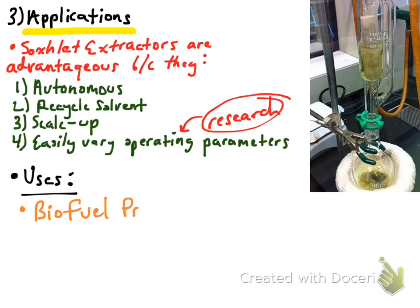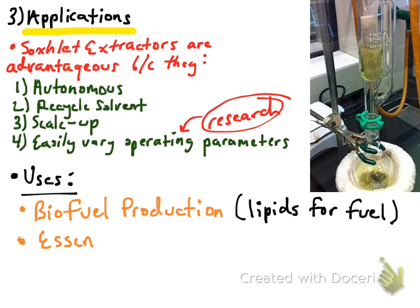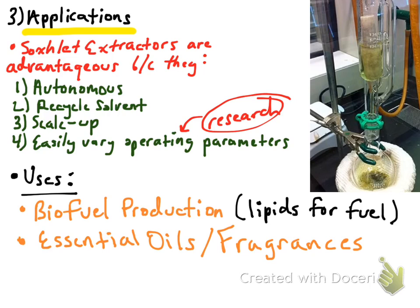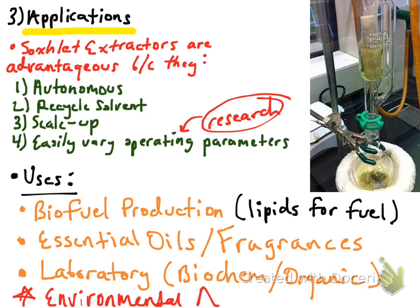There are many uses for Soxhlet extractions. The first and main one is biofuel production, as lipids are the main component in biofuels. Second is essential oils and fragrances. It's also useful in any laboratory, be it biochemical or organic. Environmental analysis is particularly fascinating — you can use a Soxhlet to analyze environmental samples such as soil, seawater, and marine species. The fat content of a biological environmental sample can tell a lot about the environment.